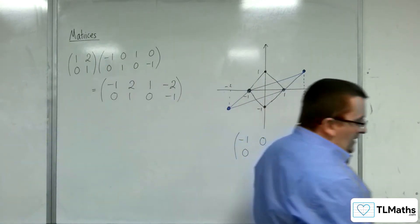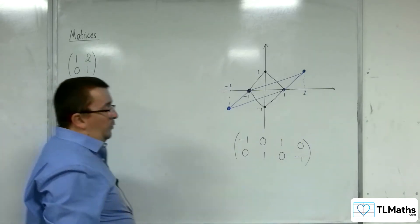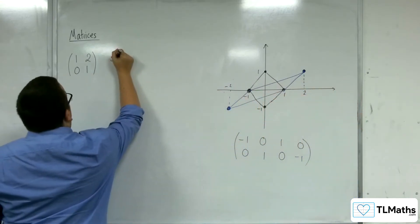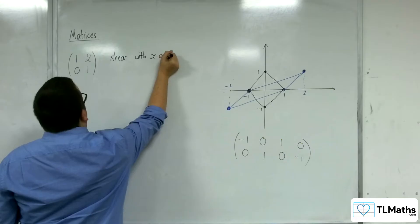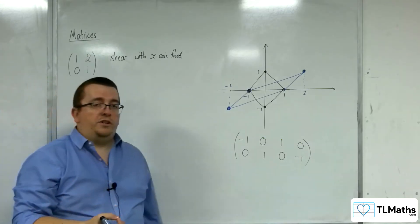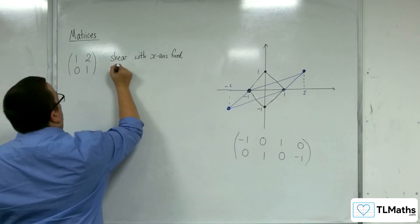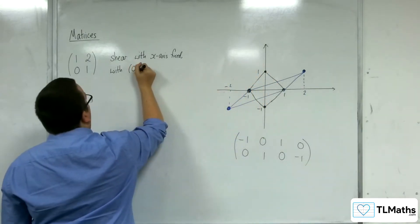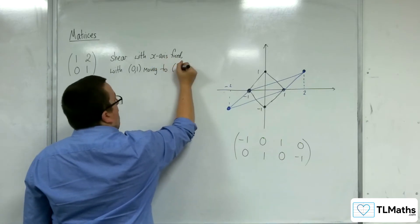So how do we describe this transformation? Now, this is important that you get this right. So we describe this as a shear with the x-axis fixed. And then you want to describe one coordinate that's not on the x-axis, where it has moved to. So let's choose this point here, 0, 1.